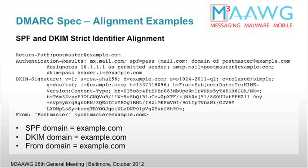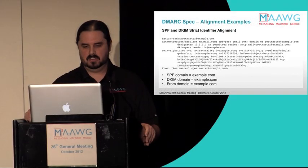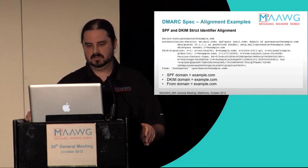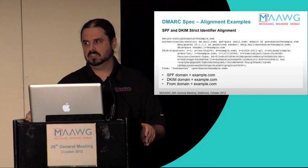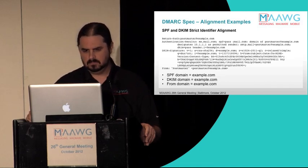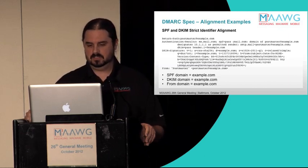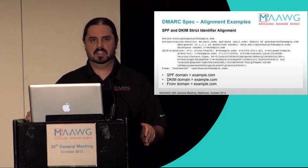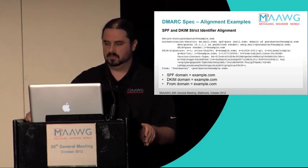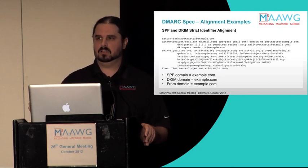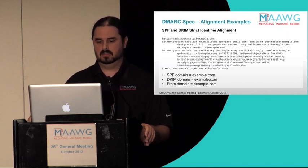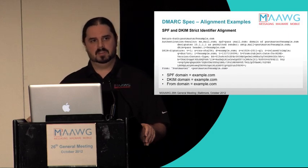In this example, we have a sample email header demonstrating strict identifier alignment. In strict identifier alignment, the domains must match exactly. The return path domain in the authentication results header is example.com, and SPF passed. DKIM also passed, and in the DKIM signature header the D= value is example.com. The From address is postmaster@example.com. So the three relevant domains — SPF domain example.com, DKIM domain example.com, and From domain example.com — are in strict alignment because they are all the same.